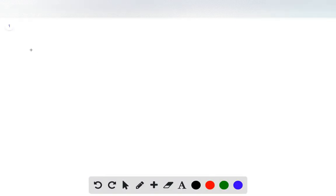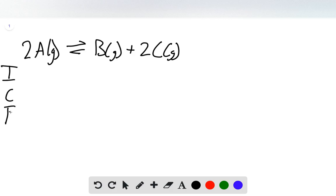So this problem begins by giving us the equation 2A gas reversibly reacts to form B gas plus 2C gas. And so what we want to do here is an ICE table where I is initial, C is change, and E is equilibrium. And so our initial value here is 225 millimeters of mercury.